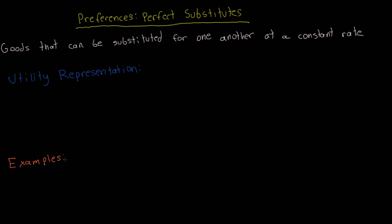In this video, I'm going to be going over perfect substitutes. Goods that are perfect substitutes can be substituted for one another at a constant rate. I'll be going over the utility representation, some examples of perfect substitutes, and the indifference curves associated with these preferences.